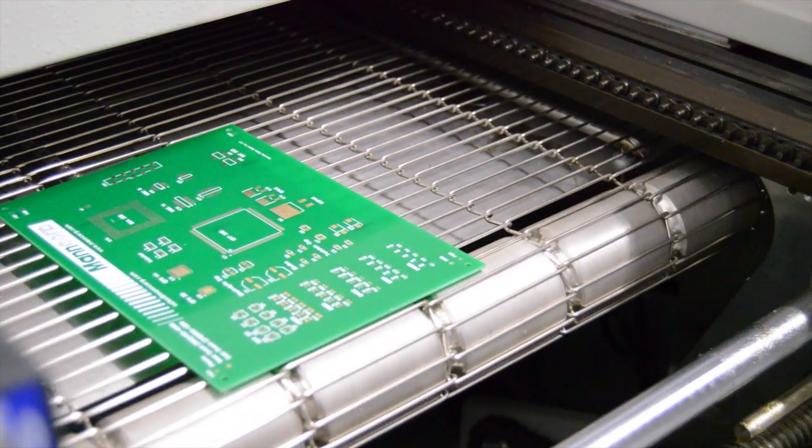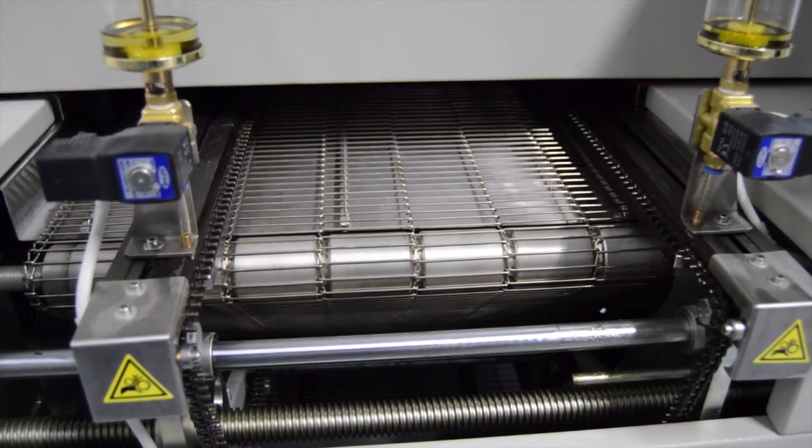The oven features a 20-inch mesh belt and a 16-inch edge rail for double and single-sided assemblies.